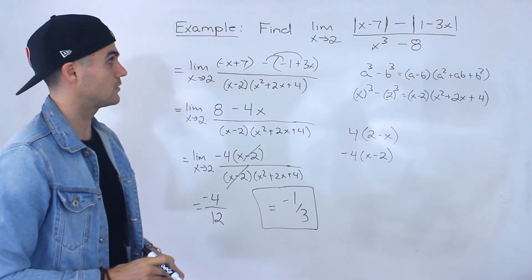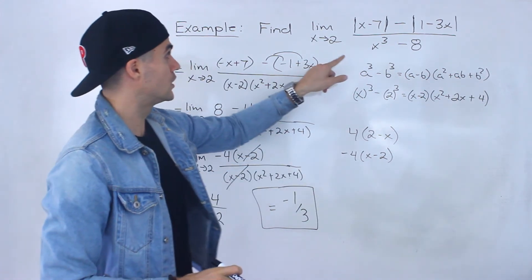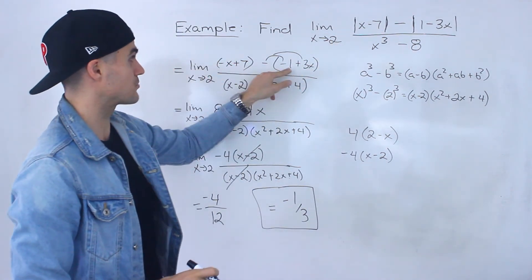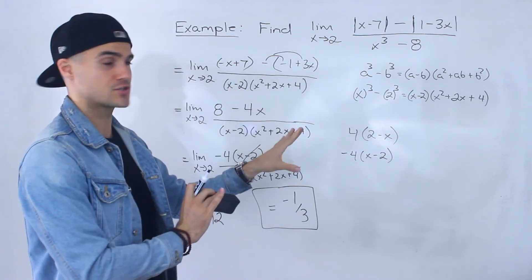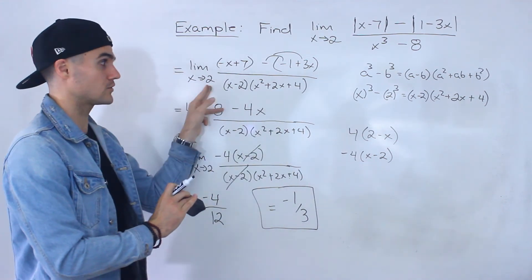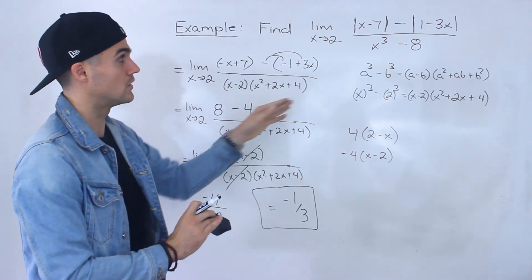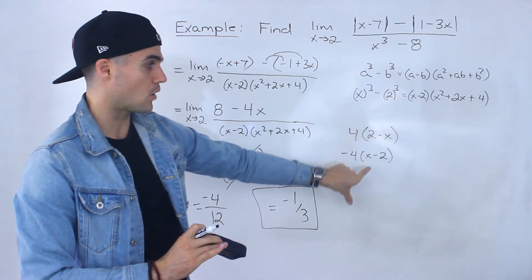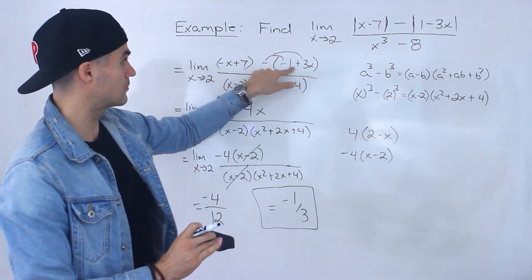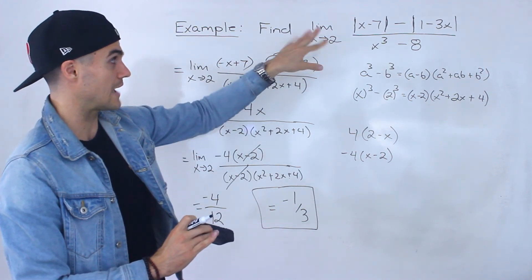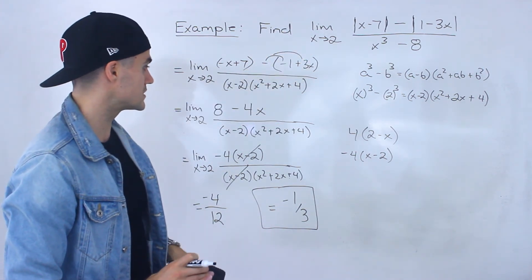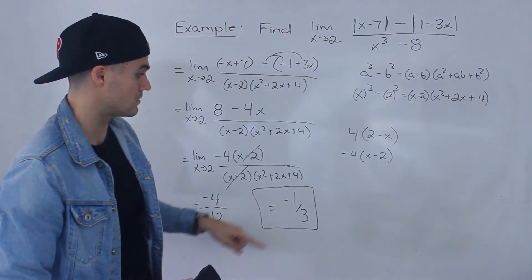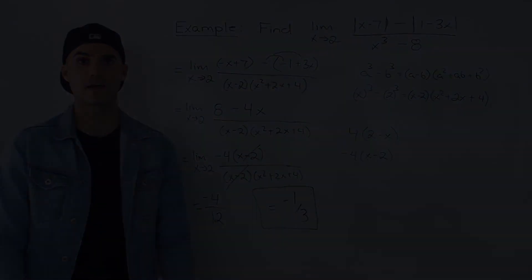So that's a tricky example because you have to convert the absolute values to the proper expressions depending on which case you're dealing with — which x value you're approaching. Convert them to piecewise functions first, identify the correct case, plug those in so the absolute values go away, factor the difference of cubes in the denominator, cancel the factors, and the final answer is negative 1 over 3.